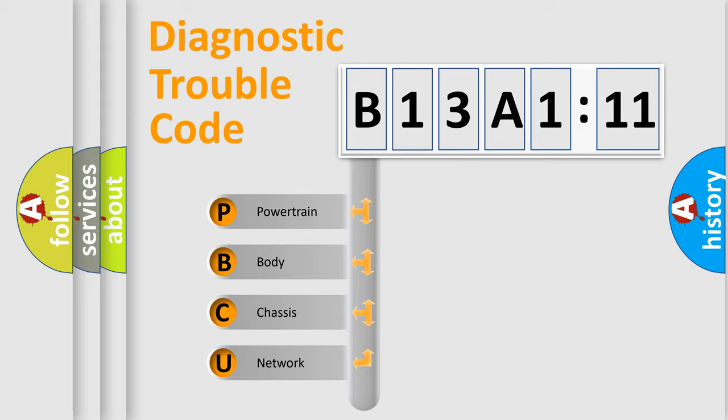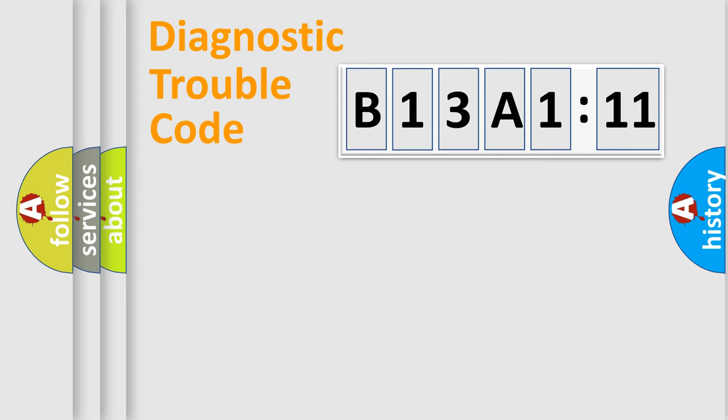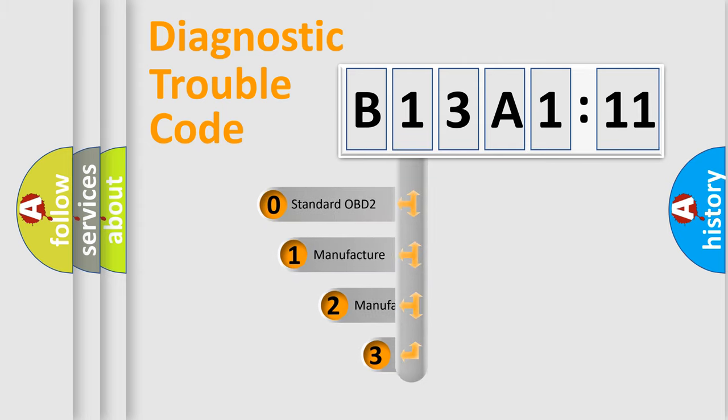We divide the electric system of automobile into four basic units: Powertrain, body, chassis, and network. This distribution is defined in the first character code.